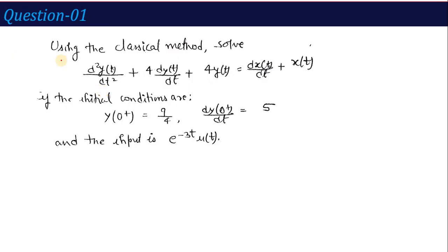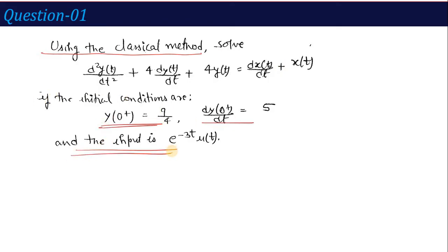One question was done in the last lecture; now this is the second question. The question may be directly stated as: using the classical method, solve this given equation given these initial conditions and this input. The solution follows the same pattern: we take the natural response by considering initial conditions only with input set to 0, then calculate the forced response considering input but not initial conditions, and finally find the total response as natural plus forced response.